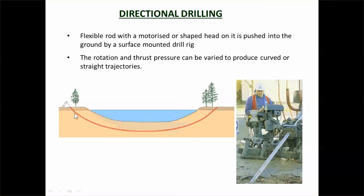With directional drilling, you have a flexible rod with a motorised or shaped head. A machine turns the rod, which is flexible to a point. You drill a pilot hole, then use a back-reaming tool to make the hole bigger. As you pull the back-reamer back, you may also be pulling the pipe in behind it, depending on the machine's power. Some machines must back-ream first, then return to pick up the pipe, as they lack the power to back-ream and pull the pipe simultaneously. You can turn the shaped head in a particular direction to steer it.